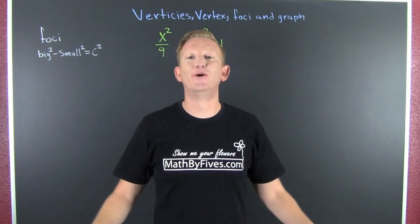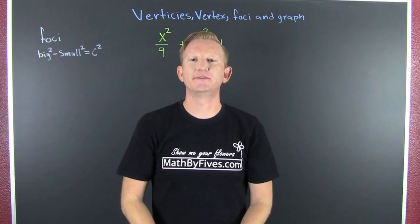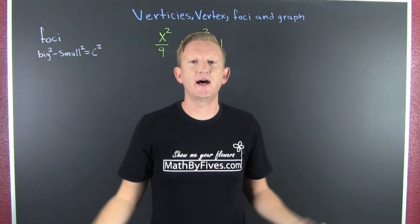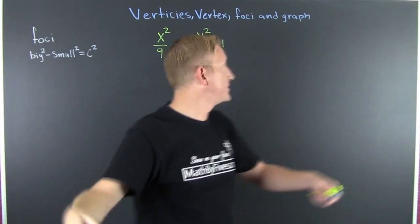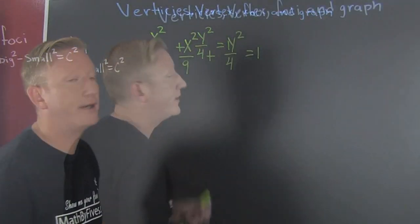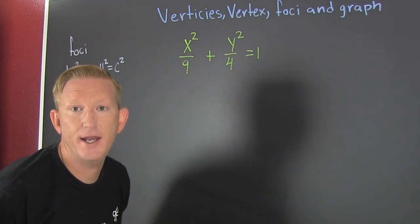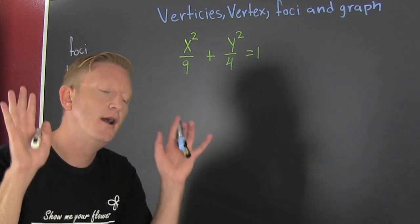You ready? Oh boy, focus people! We're gonna try to find the foci and the vertices of an ellipse. First we need to identify our a and our b - what am I talking about? Our big and our little.